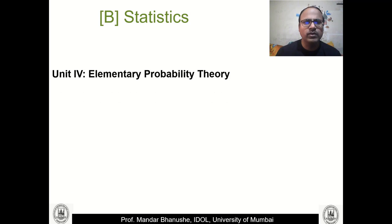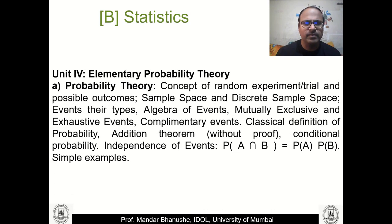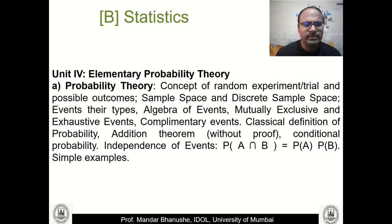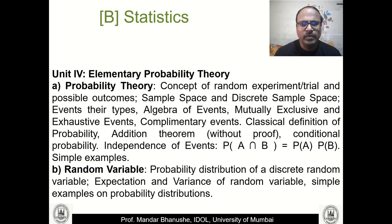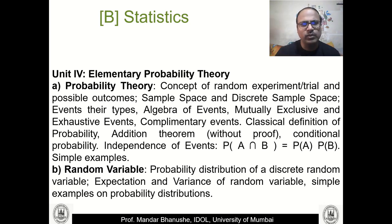Unit 4 covers Probability, including basic definitions and concepts of trials, experiments, outcomes, sample space, and algebra of events. We look at different types of events, simple probability formulas, and examples. We also cover random variables, probability distributions of a discrete random variable, and expectation and variance. There is one more unit on probability distributions in the next semester as well.